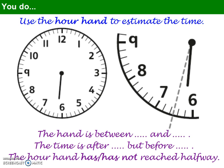The hand is between 6 o'clock and 7 o'clock. The time is after 6 but before 7, so we're working with 6 hours and some minutes. The hour hand has not reached halfway, so it's before 30 minutes. Looking more closely, it appears to be about halfway between 6 o'clock and the halfway point — so halfway between 0 and 30 minutes. Half of 30 is 15, so we can estimate this to be around quarter past 6, or 6:15. As for estimates, if you said anything between 10 past 6 and 20 past 6, that's close enough.